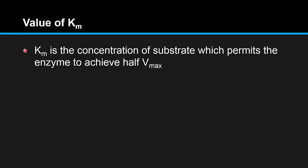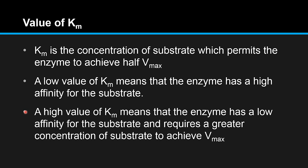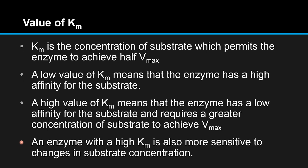Value of Km: Km is the concentration of substrate which permits the enzyme to achieve half Vmax. A low value of Km means that the enzyme has a high affinity for the substrate. A high value of Km means that the enzyme has a low affinity for the substrate and requires a greater concentration of substrate to achieve Vmax.